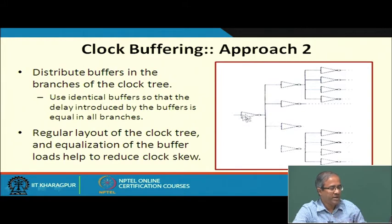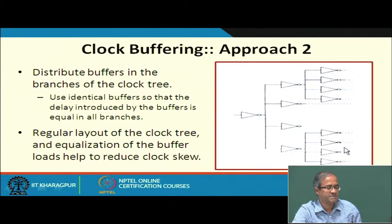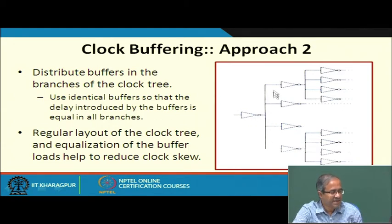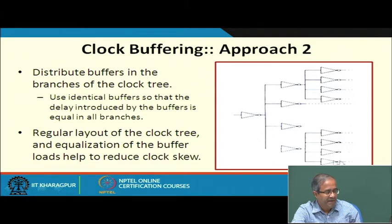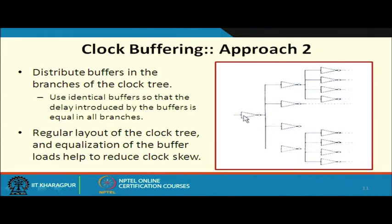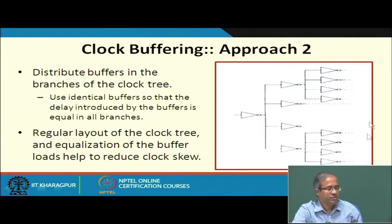In the second approach, buffers are distributed along the edges of the tree using identical buffers — for example, every buffer drives four others — so all have equal current-driving capability and equal delays. By laying out a regular network, delays along all branches including both buffer delays and interconnection delays can be equalized, minimizing skew.